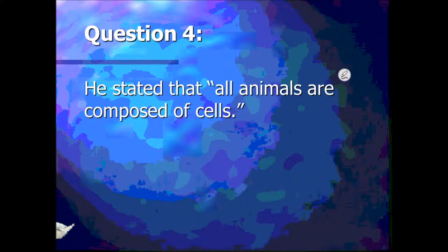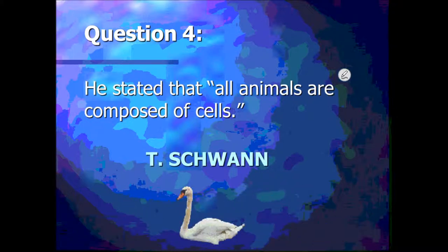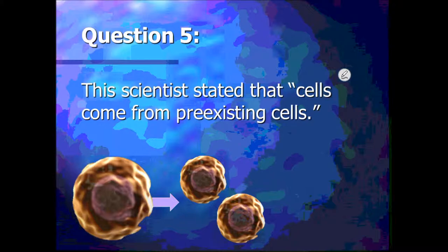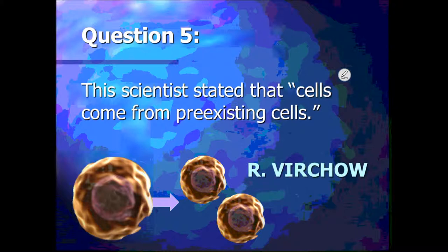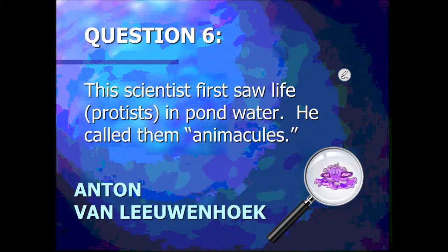Question four: this scientist stated that all animals are composed of cells. His name was Schwann — and remember, Schwann sounds like the animal 'swan.' Question five: this scientist stated that cells come from pre-existing cells. Remember: cows come from cows, so cells come from cells — and that scientist is Virchow, who said all cells come from a pre-existing cell. Question six: this scientist first saw life in pond water and called them animalcules. Life and living both start with L, and that scientist is Leeuwenhoek — also the first person to see bacteria.